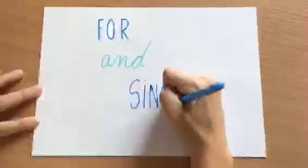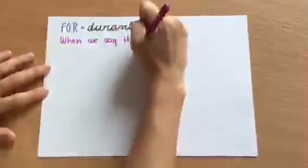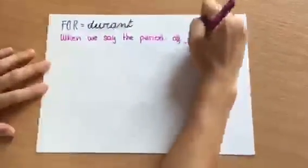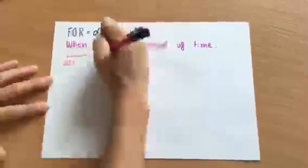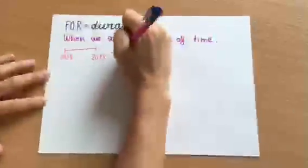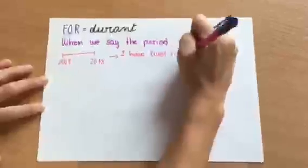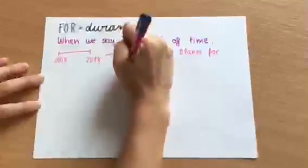For and since. We use for when we say all the period of time. For example, I have lived in Blanes for 10 years.